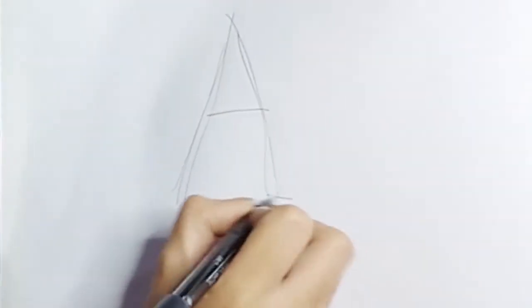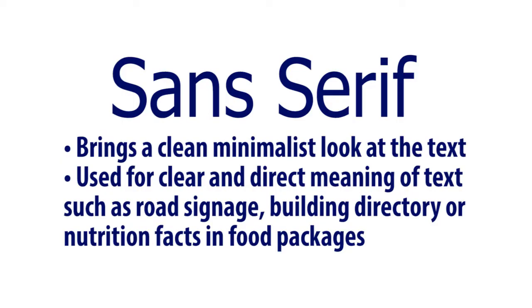When we say serif, it has lines on its edges. Next, we have what is called sans-serif. It brings a clean, minimalist look to the text. It is used for clear and direct meaning of text such as road signage, building directories, or nutrition facts in food packages. Sans-serif is more on minimalist.